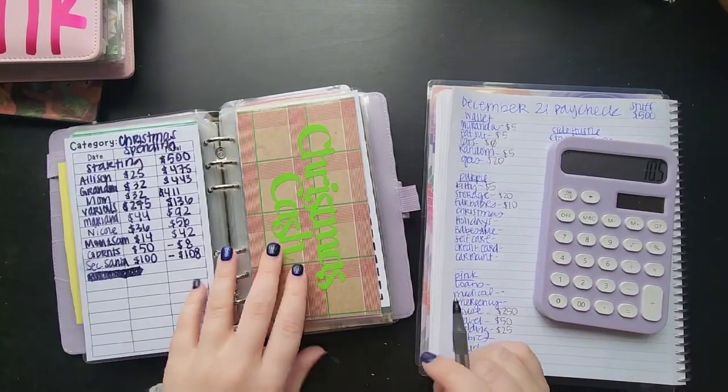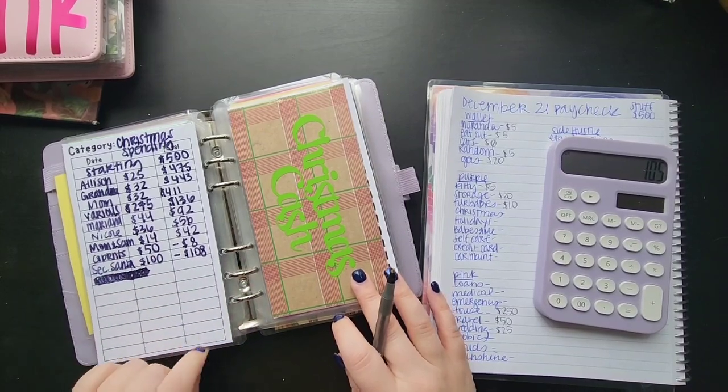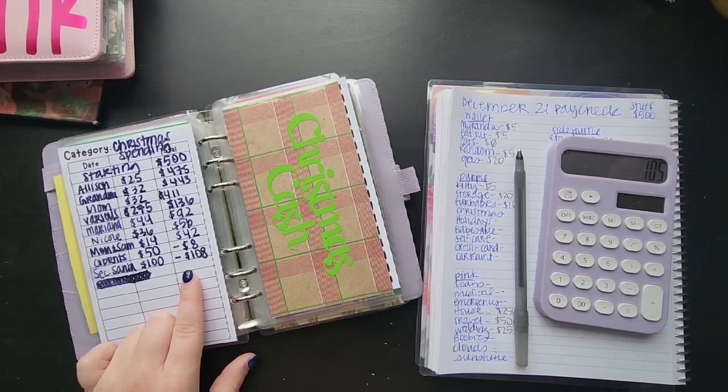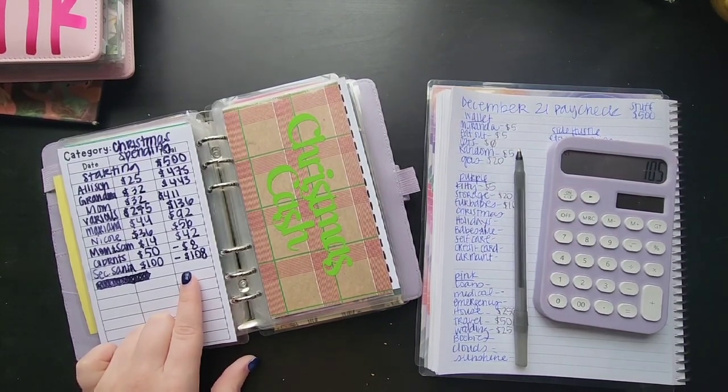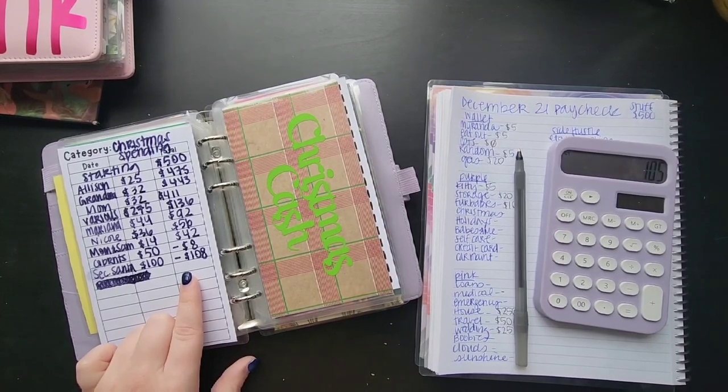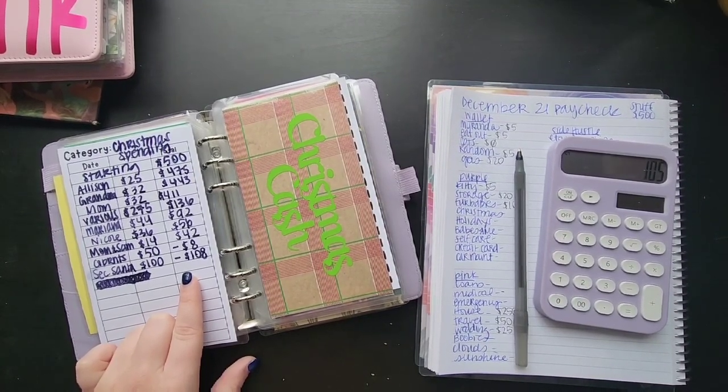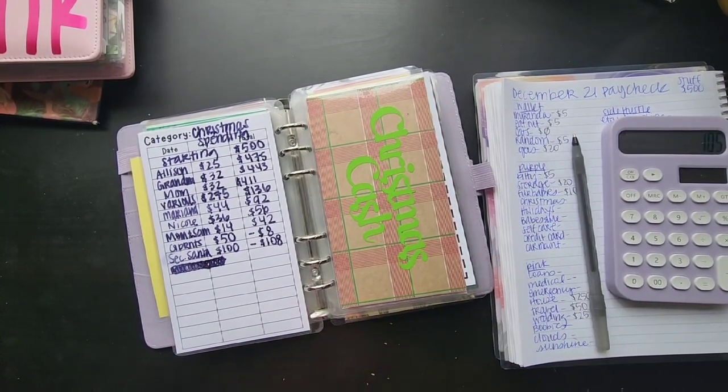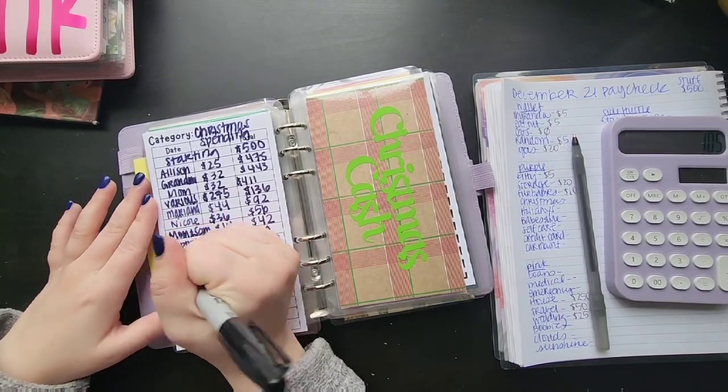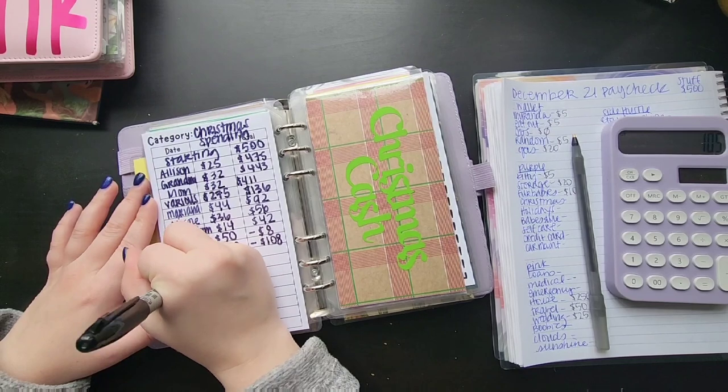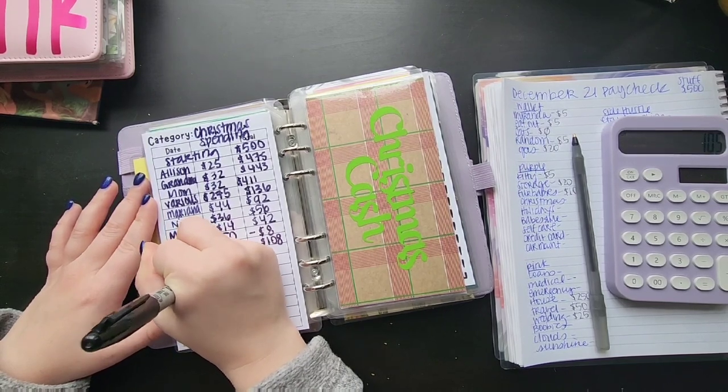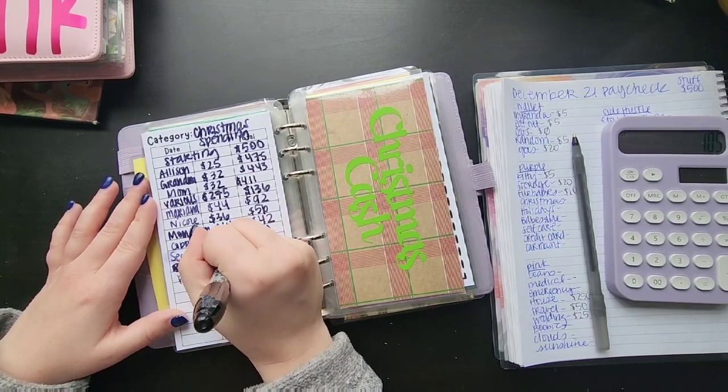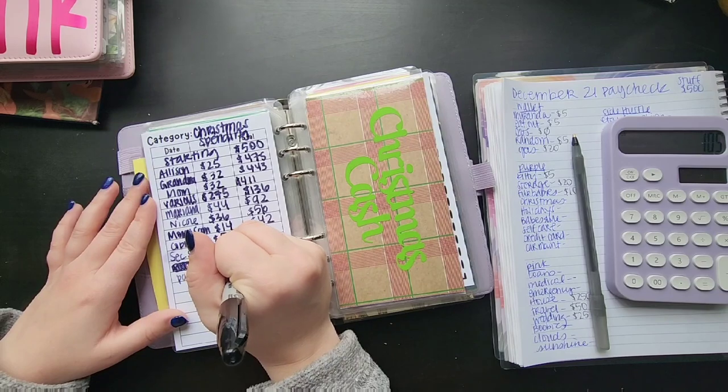Christmas, this is my Christmas spending. I am over budget but I do remember I forgot that some of the gifts that I had paid for my sister was splitting with me so she sent me pay from Allison, she sent me 87.